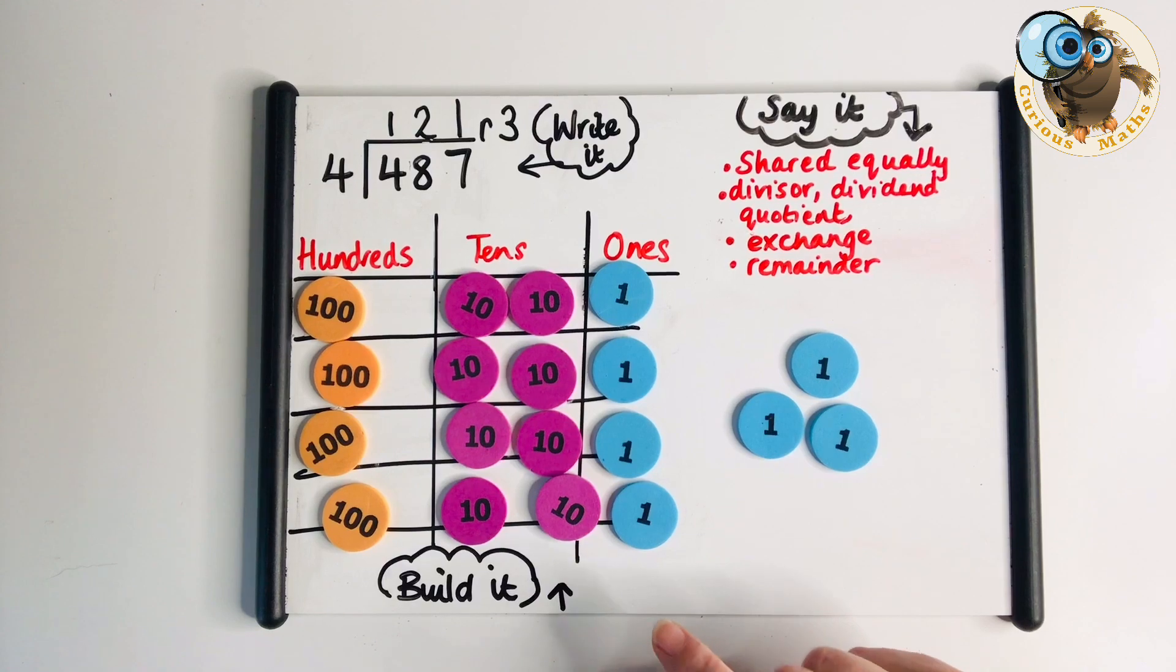You will notice that for this question I've only concentrated on a remainder being in the ones digit. I've kept the rest of the question quite straightforward so we can really make sure they understand this remainder. And here it is. We can see we have one one for each person and there are three remaining. To do the draw for this model, I would simply replace the place value counters with a diagram. You could do that with base 10.